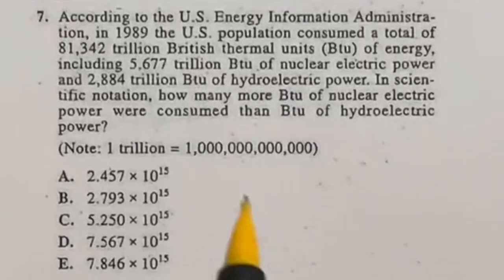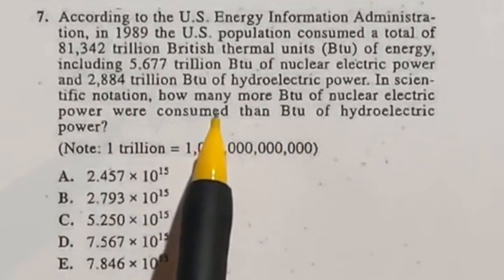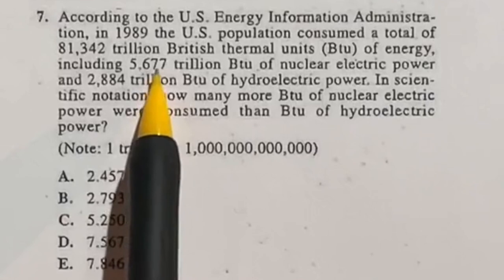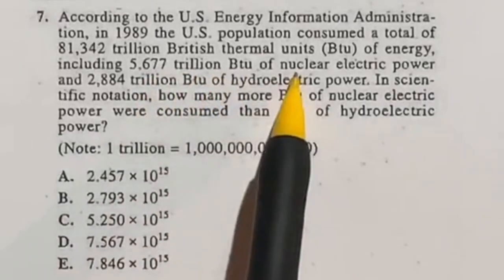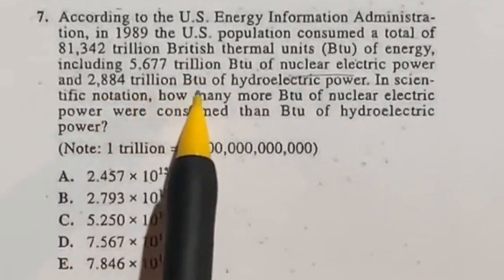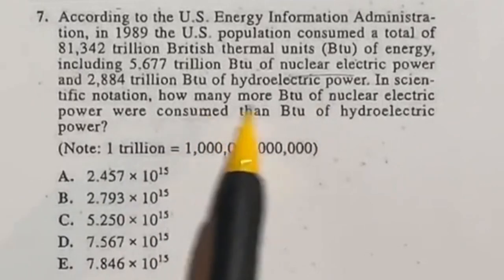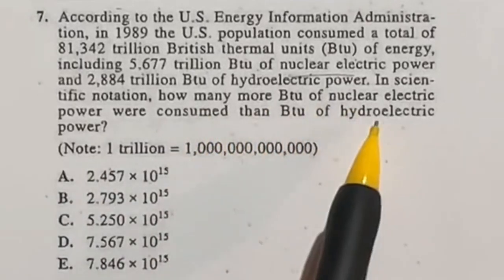This is one of those questions that's super easy, it just looks confusing because it has so many words involved. Overall it says that they have 5,677 trillion BTUs used on nuclear energy, 2,884 trillion BTUs of hydroelectric power, and it wants to know what's the difference between those two. So how many more of the nuclear than the hydroelectric.